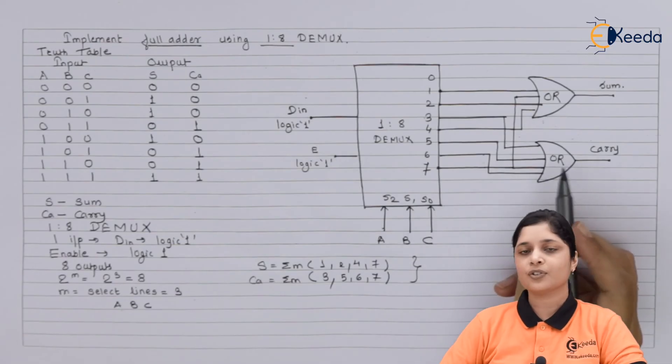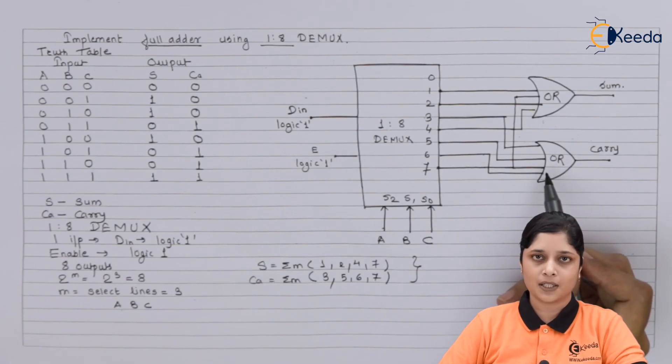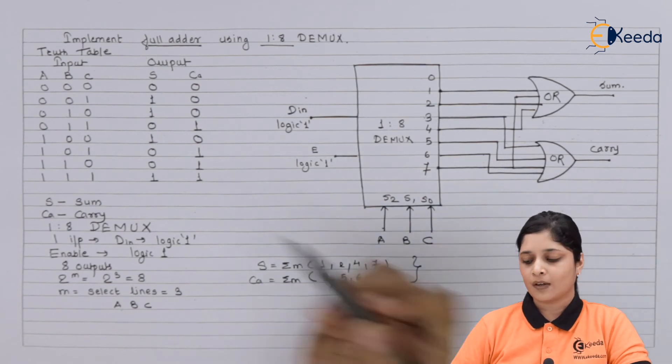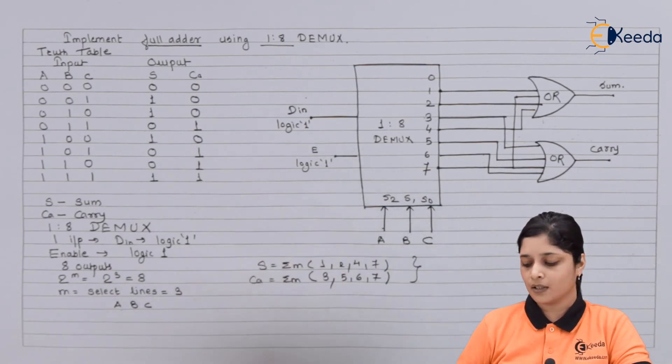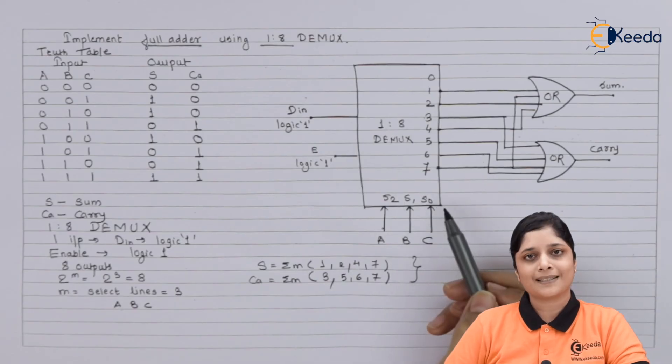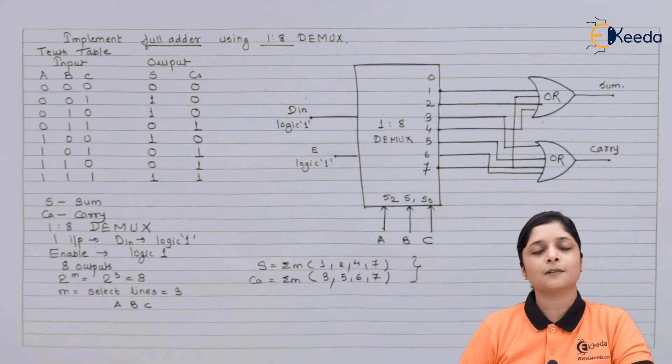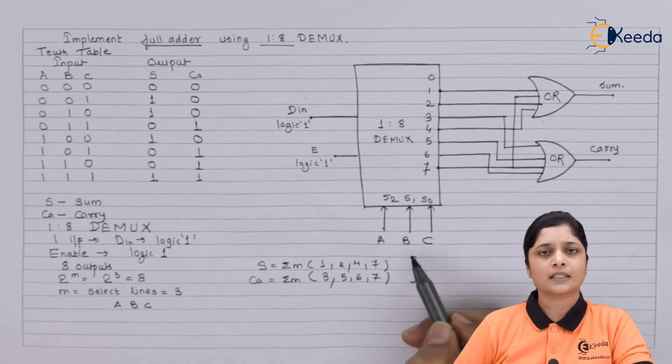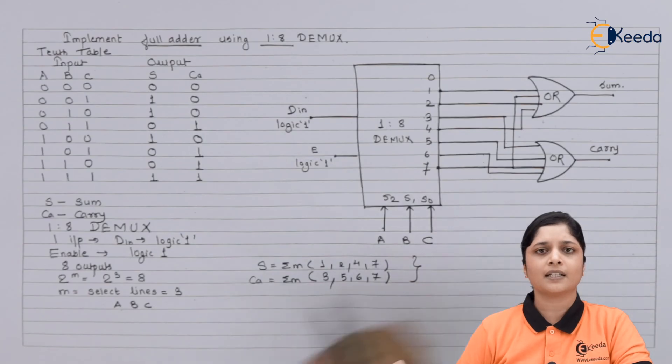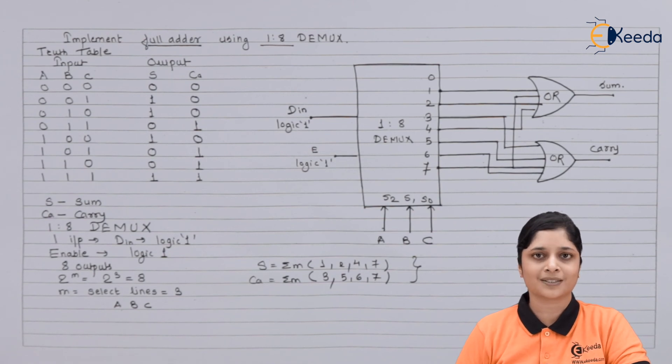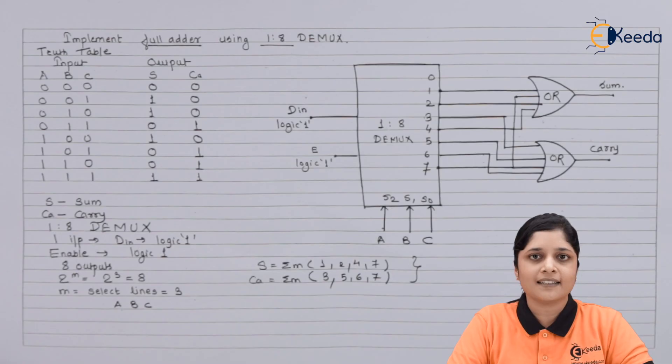So in this way you have to realize the circuits for sum and carry using 1 is to 8 demultiplexers. So what we have done here to realize 1 is to 8 demultiplexers for full adder: we have drawn the truth table, after that we have achieved the expressions for the two outputs sum and carry, and with the use of the basic operations of demultiplexers, basic principles of demultiplexers, we have drawn the circuit diagram for 1 is to 8 DEMUX. It has 3 select lines, 1 input, 1 enable terminal and 8 outputs. This is all about the explanation of implementation of full adder using 1 is to 8 DEMUX. Thank you for watching this video. Stay tuned with Ikeda and subscribe to Ikeda.